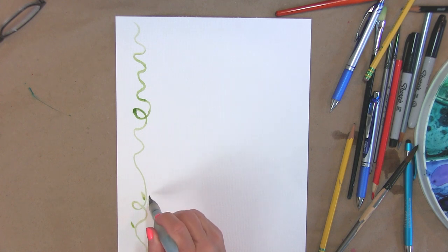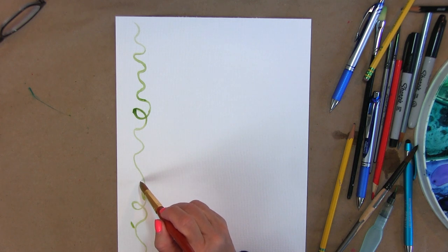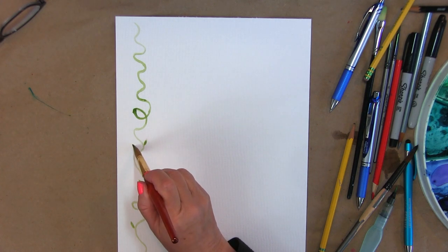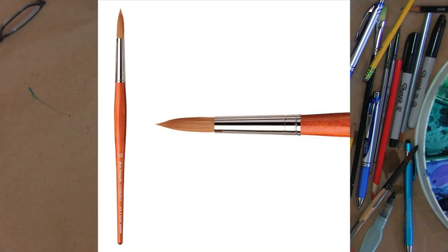The other brush I'm using here is called a Princeton round, it's a number 12. The reason why I like it is because it has this super fine point at the end. It's also a very thirsty brush, so I can pick up a lot of water and paint.